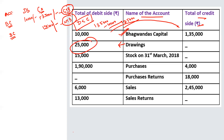In the net trial balance for Bhagwan Das's Capital: the difference is 1,35,000 minus 10,000 equals 1,25,000. Credit side is more, so there is a credit balance of 1,25,000. For drawings, there is only a debit balance with nothing on the credit side, so the entry is the same in both gross and net. For purchases: debit is 1,90,000 and credit is 4,000.